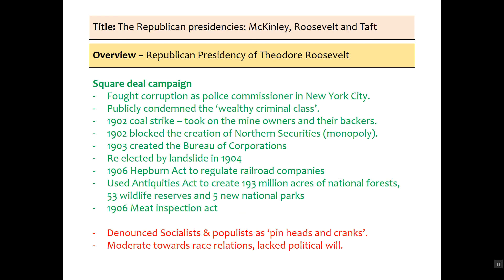Theodore Roosevelt's policies are known as the Square Deal — what he campaigned on from his 'bully pulpit,' which is what he called the presidency. He was able to fight for workers' rights, women's rights, and the environment from this pulpit. He fought corruption as police commissioner in New York City, which is where he gained his reputation as a radical interventionist. He publicly condemned the 'wealthy criminal class' — in reference to Andrew Carnegie, Vanderbilt, and Rockefeller. He blocked the creation of Northern Securities and established the Bureau of Corporations, a government wing designed to stop and evaluate large corporations.